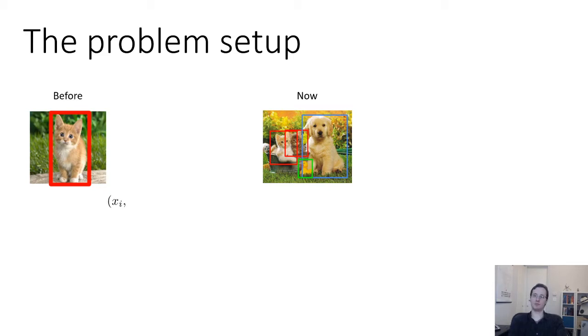So before we had an XI and then we had a label and bounding box coordinates. Now we have an image XI, we have the class CI1 for the first object and XI1, YI1, WI1, HI1 for the bounding box.